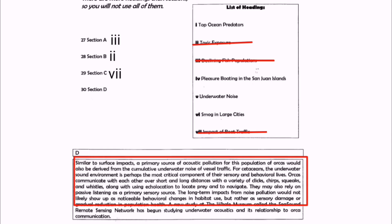Going through the remaining headings and eliminating options — heading number one: top ocean predators, no; heading number four: pleasure boating in St. John Islands, no; heading number six: smog in large cities, no — heading number five, underwater noise, is the right heading for paragraph D. We can cross heading number five and write Roman numeral 5 in front of question number 30.